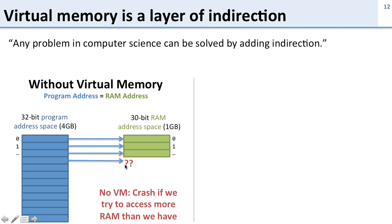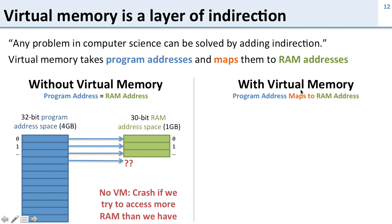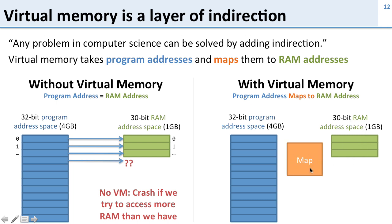Virtual memory is going to solve this by adding a level of indirection. In virtual memory we're going to take the program addresses and map them to a RAM address. So instead of going one-to-one, we're going to have a slightly different mapping. Here's virtual memory and it's going to do this mapping. We have our 32-bit program address space, we still only have one gigabyte of memory installed, but now we're going to have this map in the middle, and this map is going to provide exactly this indirection.